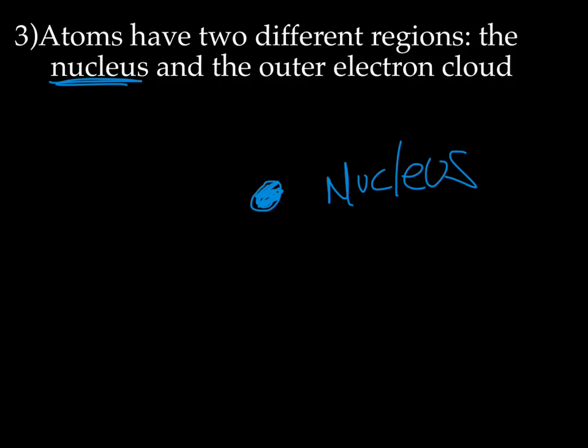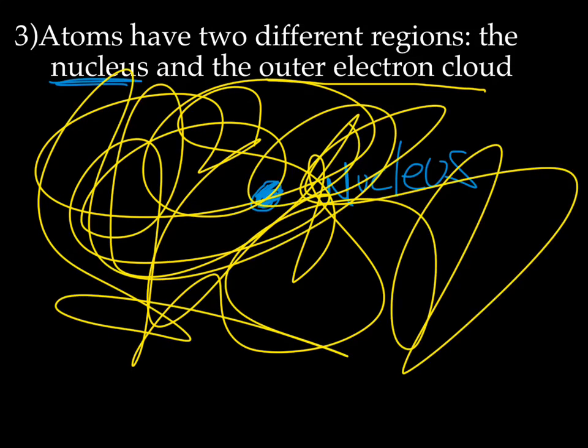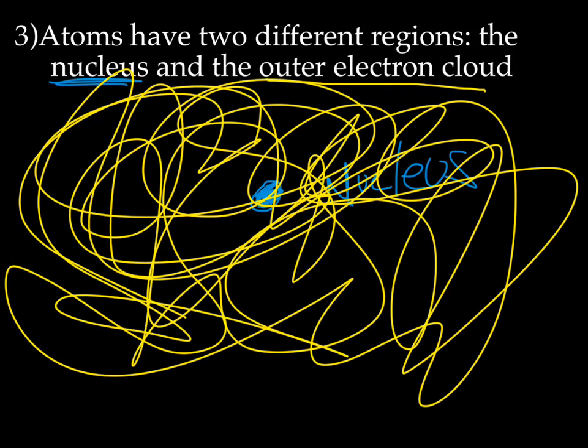Like what you learn in biology, the nucleus of an atom is in the center of the atom, like the nucleus of a cell is at the center of the cell. However, the nucleus of an atom does not — I repeat, does not — contain DNA like the nucleus of a cell. In fact, atoms are so small that DNA is made up of billions of atoms. Now let's draw the outer electron cloud. All this scribbling here is actually the outer electron cloud. So there are the two regions of the atom: the nucleus in the center, nice and dark and dense, and the outer electron cloud.